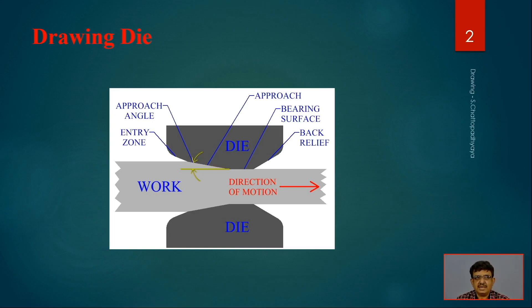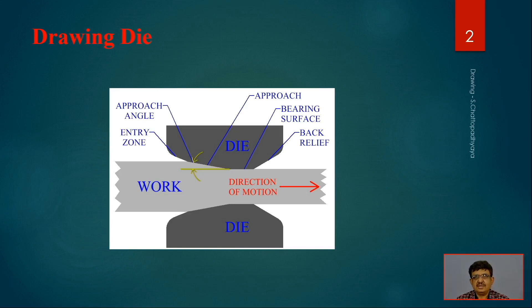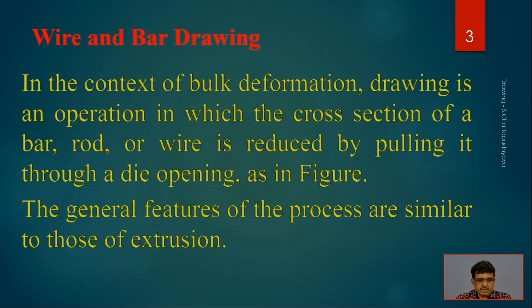A very clever method of pulling through the die is that initially a coiler pulls it out. Once one coil is finished it is butt welded to the next one so that pulling is continuous — this is the age-old practice of wire drawing plants.